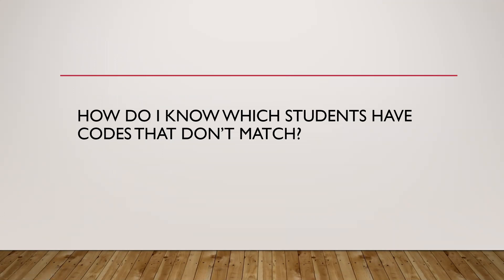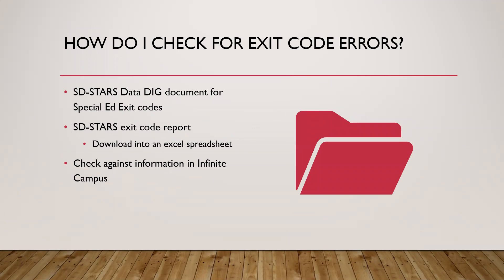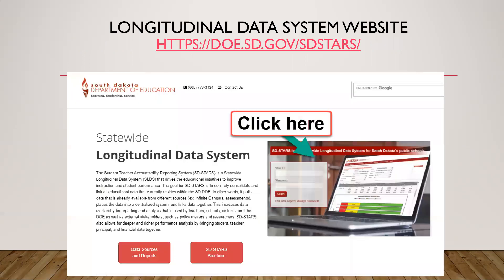How do you know which students have codes that don't match without checking every student in Infinite Campus? That's where we go to SD Stars. When you go into SD Stars there is a document called the SD Stars Data Dig that helps you look for those special ed exit codes and walks you through what to look for. SD Stars also has an exit code report that you can download into an Excel spreadsheet, which you can then check against information in Infinite Campus.